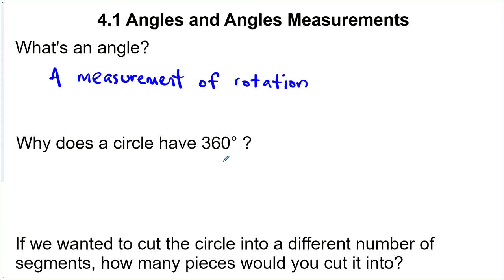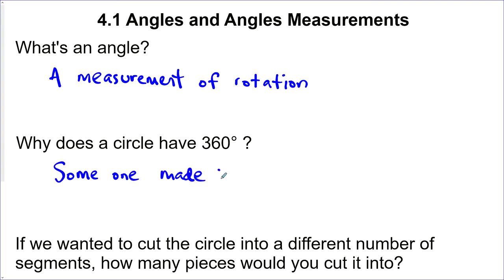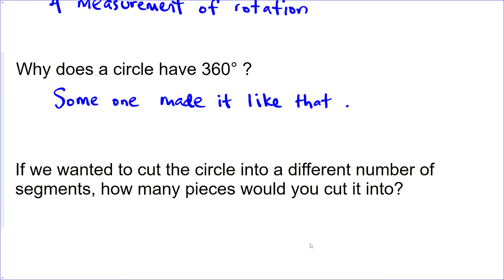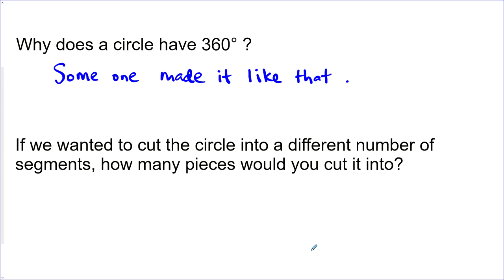Why does the circle have 360 degrees? Well, there are lots of reasons. Don't believe any of them — there's no good evidence about why a circle has 360 degrees. It's a convenient number, no doubt, but who made it up? We don't know. So 360 degrees is arbitrary. It's a good number. If you were going to cut a circle into a different number of segments, how many pieces would you cut it into?